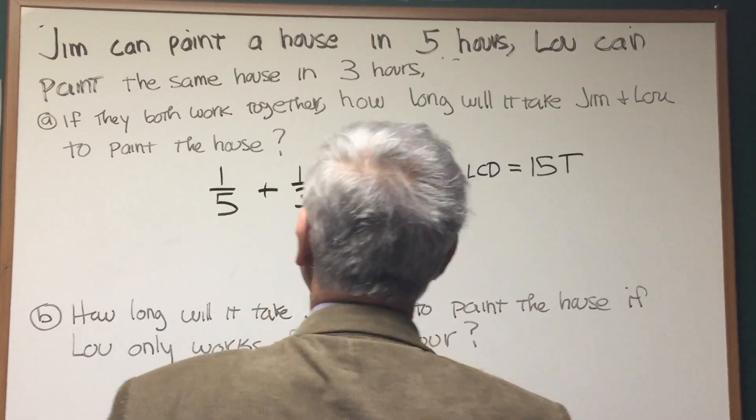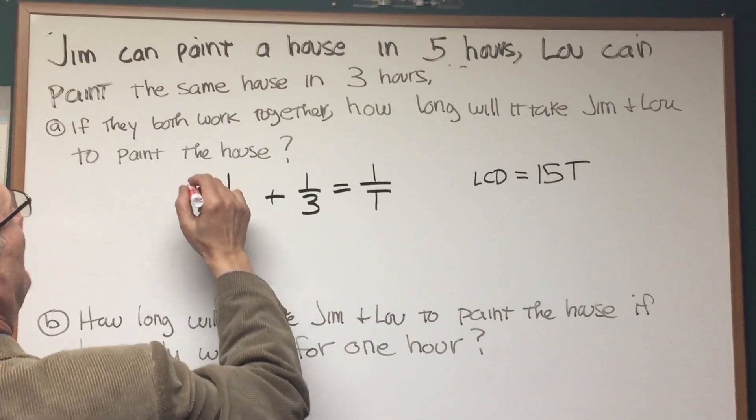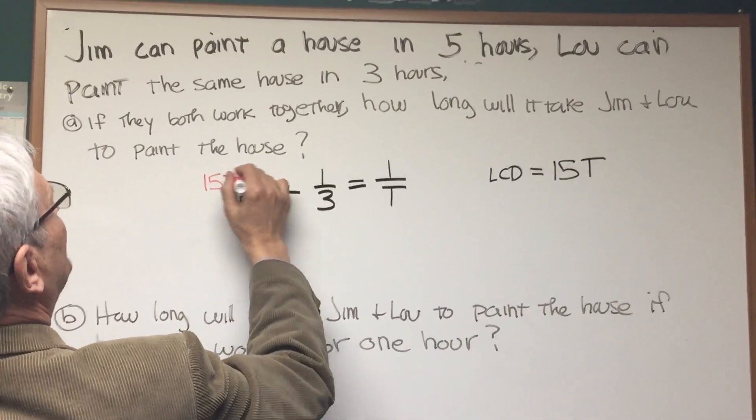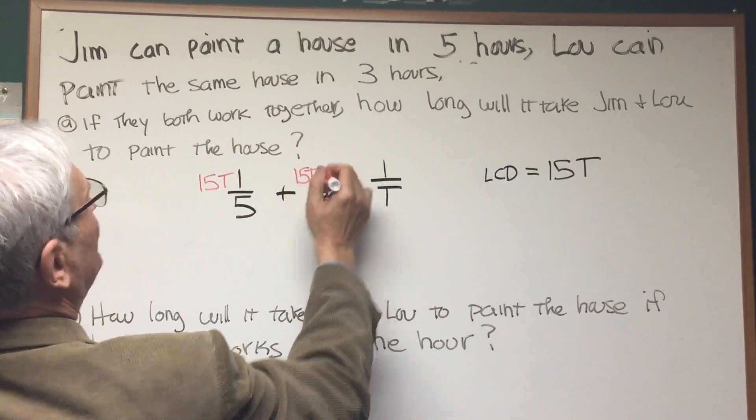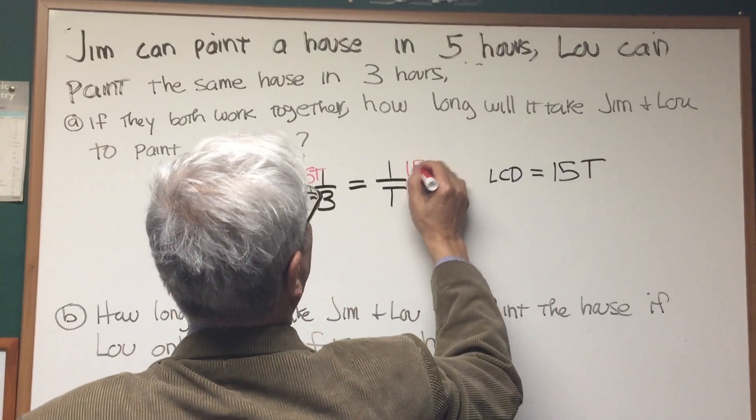So let's multiply each of these, both sides of the equation, by 15T. 15T, 15T, 15T, using the distributive property, 15T.